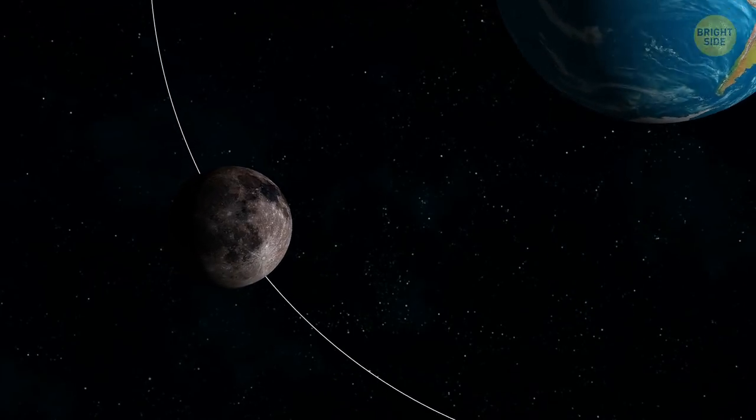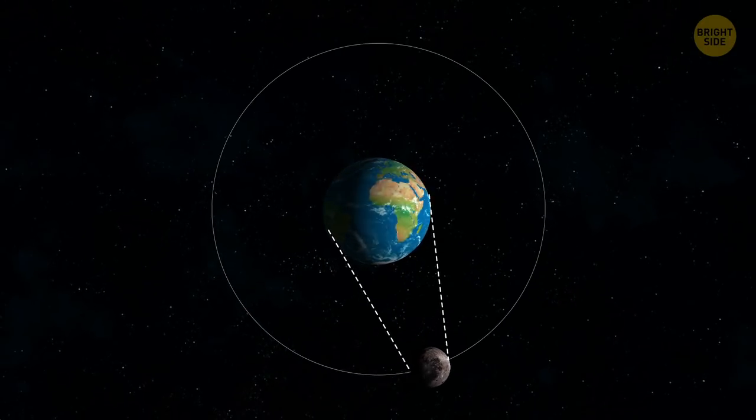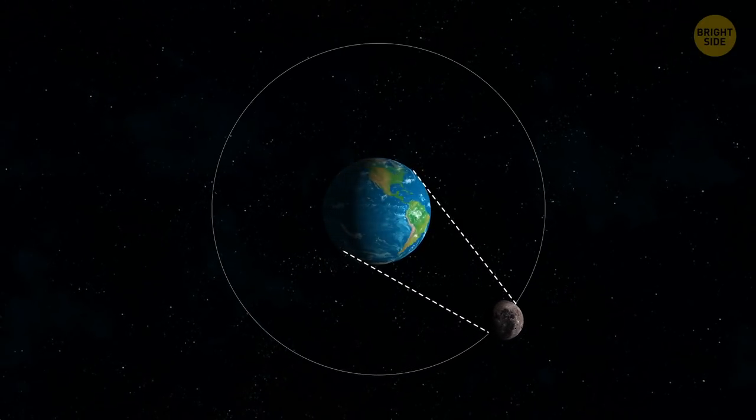Now, we always see the same side of the Moon no matter where we are on Earth. That's because the Moon rotates around the Earth at the same speed it rotates around its own axis.